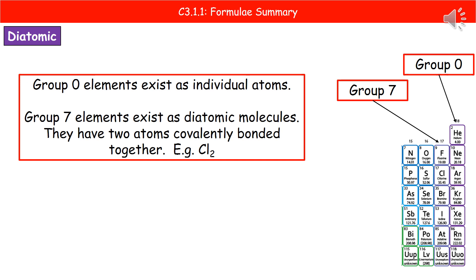Moving one column left to group seven — the halogens — these exist as diatomic molecules. 'Diatomic' means two atoms in the molecule: 'di' meaning two, and 'atomic' referring to the atoms. It's really important to remember that whenever you write any group seven element, you must always include the subscript 2. This is one of the most common ways to lose marks, because without the diatomic molecule written correctly, your balancing will never work. The same applies to oxygen as well.